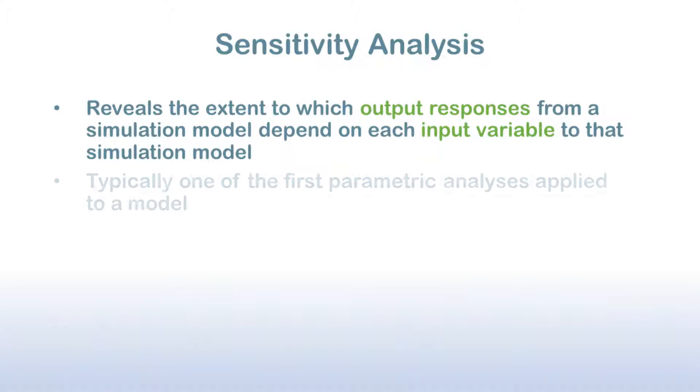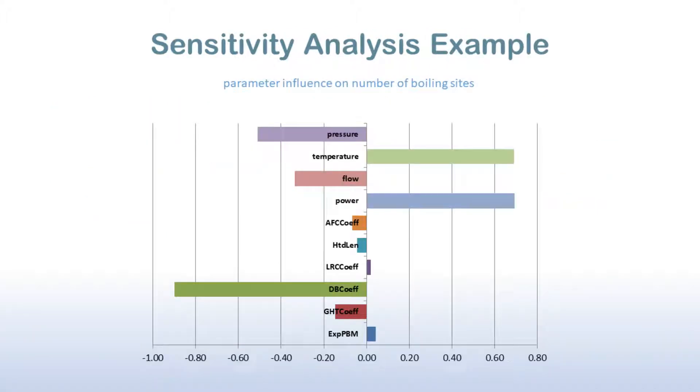Sensitivity analysis is typically one of the first parametric analyses conducted on a new simulation model with Dakota, as it can greatly assist with identifying key model characteristics and developing an intuition about the model's behavior. You would primarily use sensitivity analysis to rank the most important variables, and then subsequently down-select on those variables for follow-on analyses, such as calibration, uncertainty quantification, or surrogate model construction.